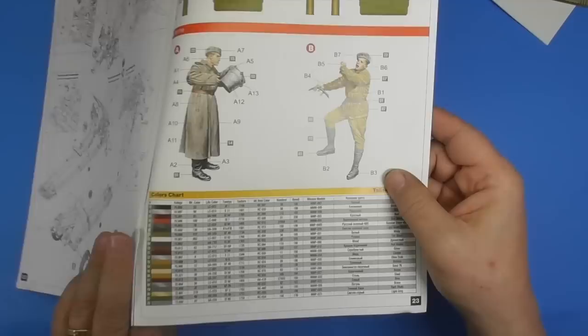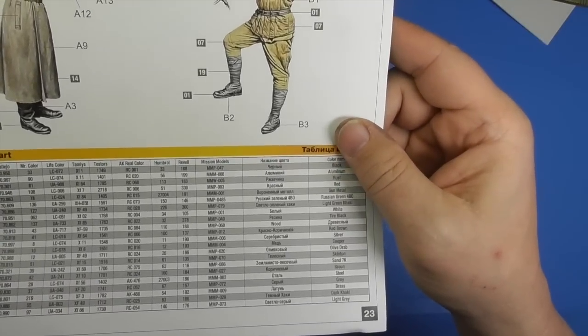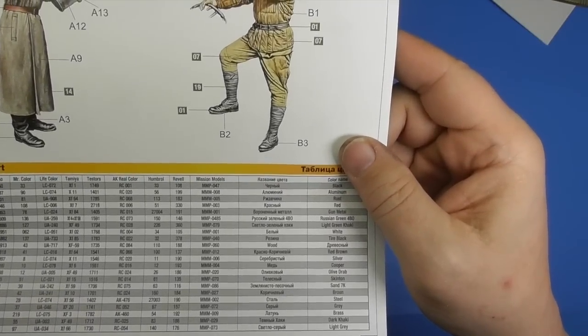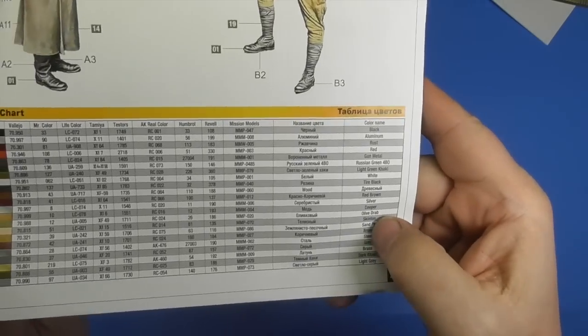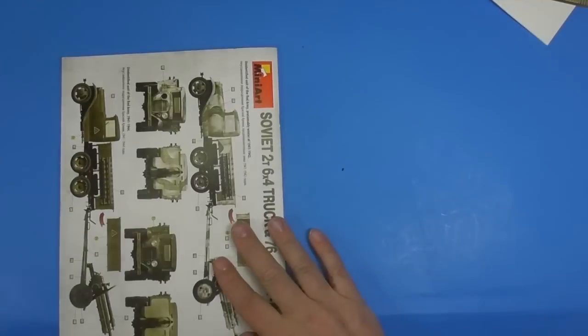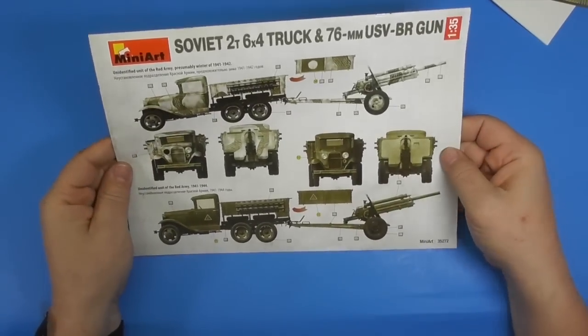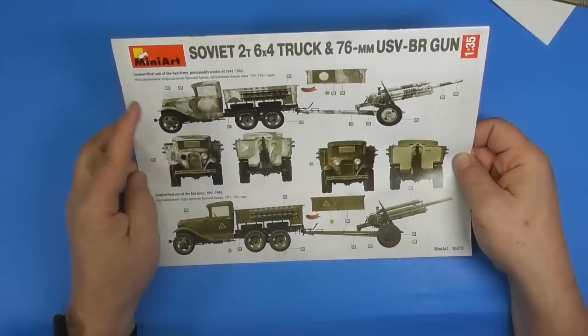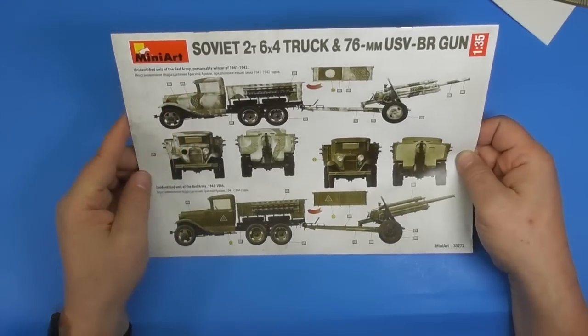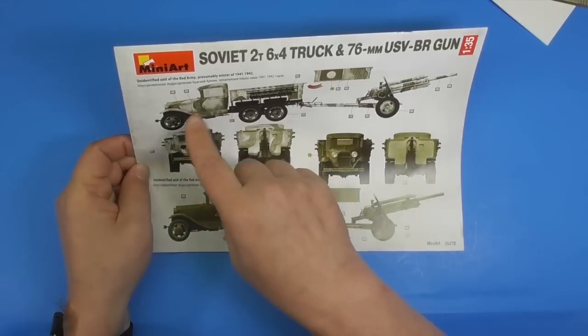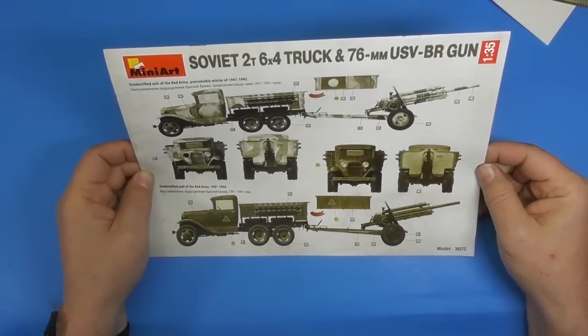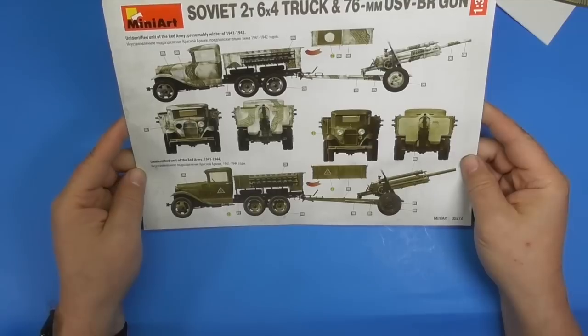There's your color call out chart. Vallejo. Mr. Color. Life Color. Tamiya. Testors. A.K.A. Real Color. Humbrol. Or Mission Models. And the actual names of the colors. Two schemes. Winter camouflage scheme with that interesting netting design. Paint the whole thing white. Tape off the green areas. Put some masking down. Paint it up. Or just your basic red army green.